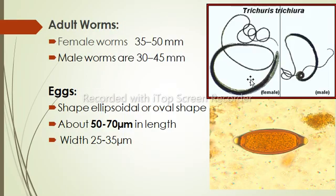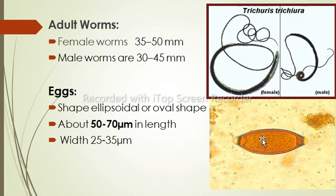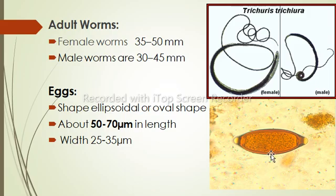Regarding adult male and female worms of Trichuris trichiura: female worms are larger than males, approximately 35–50 mm long, compared to male worms which are about 30–45 mm in length. Their eggs are ellipsoidal to barrel-shaped or oval-shaped, measuring 50–70 micrometers in length by 25–35 micrometers in width.